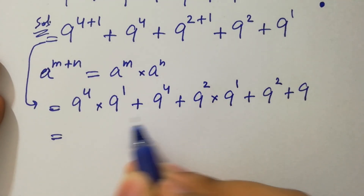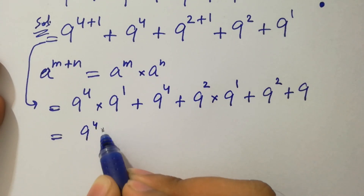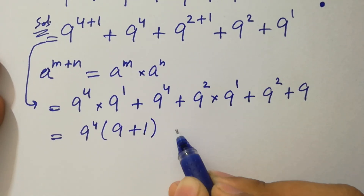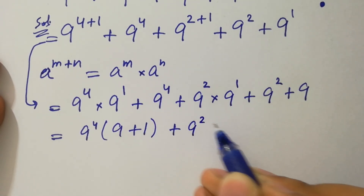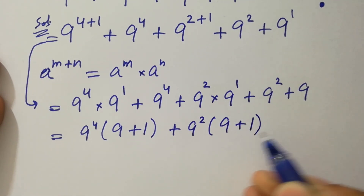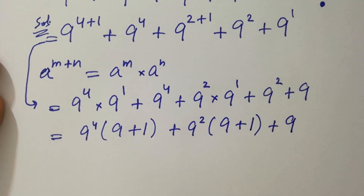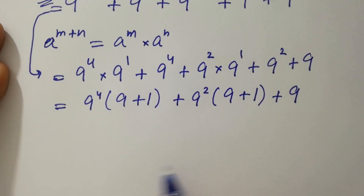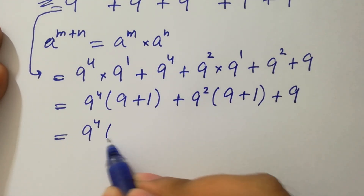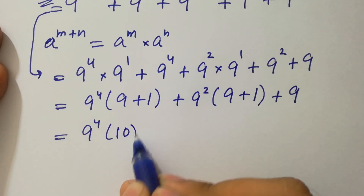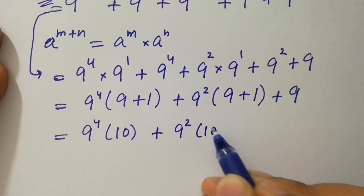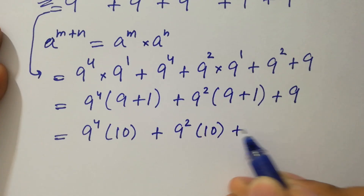Here 9 to the power 4 can be common. We have here 9 plus 1. Plus 9 squared can be common — we have 9 plus 1 — plus 9 as it is. 9 to the power 4 times 9 plus 1 is 10, plus 9 squared times 9 plus 1 is 10, plus 9.